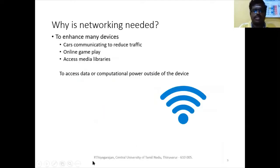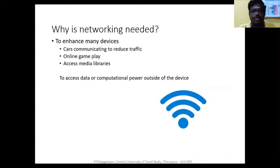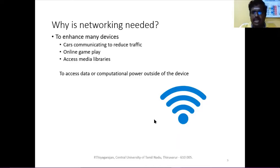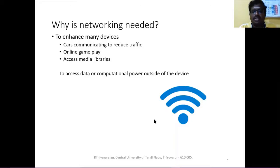Before proceeding, we will discuss why we need networks — it is always good to ask why. Networking is the very ultimate core of the Internet of Things. There are two important components in any device: intelligence and the network. We will discuss why networking is needed, how it is helpful, the general structure of networks, and some broad categories. IoT is a smart device, and the network will enable the device to connect to the outside world.